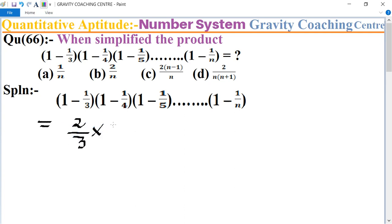The second part is 3 upon 4, and the third part is 4 upon 5, multiplied, dot dot dot, n minus 1 upon n.